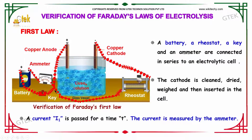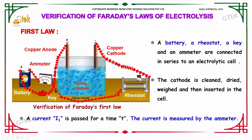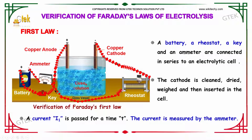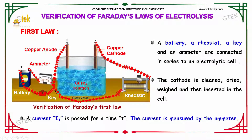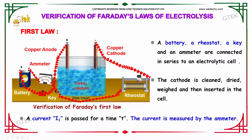This is an electrolytic cell. The cathode is cleaned, dried, weighed, and then inserted in the cell. A current I1 is passed for a time t, and the current is measured by the ammeter.